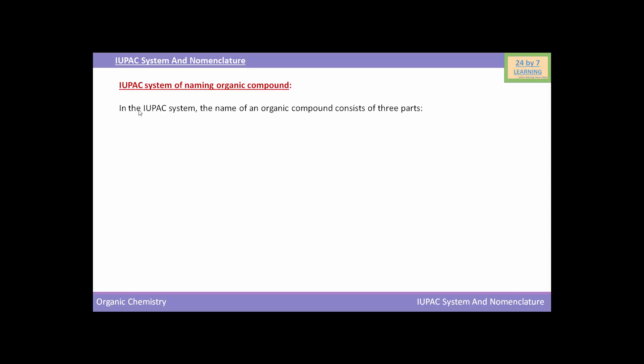In the IUPAC system, the name of an organic compound consists of three parts: the word root, prefix, and suffix. Among these, first of all we will see the word root.